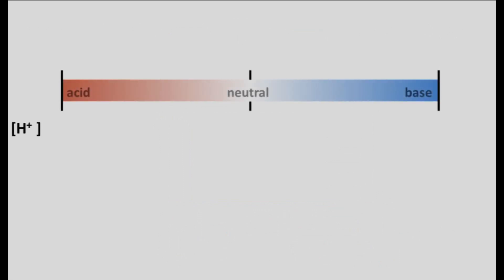So now we can start plotting a scale of proton concentration. And it turns out that neutral solutions like water have a very small amount of moles per liter of protons. And this is a hard number to write. So we write it as an exponent. We move the decimal place over to the right seven places, and it's 10 to the negative seventh power.